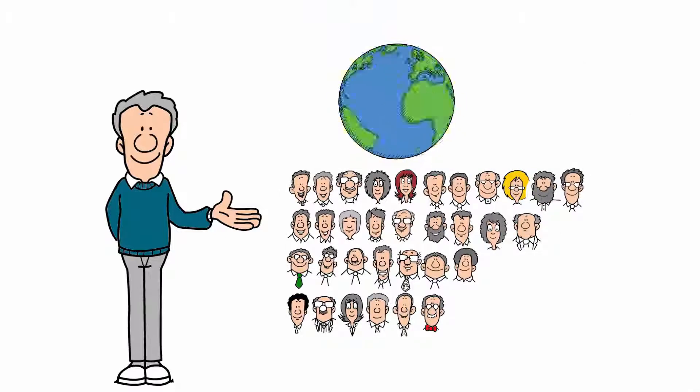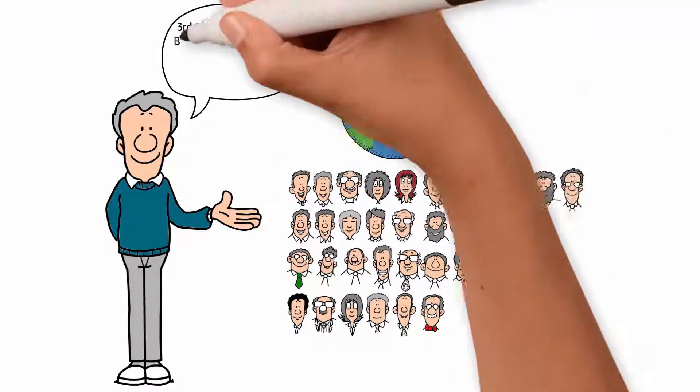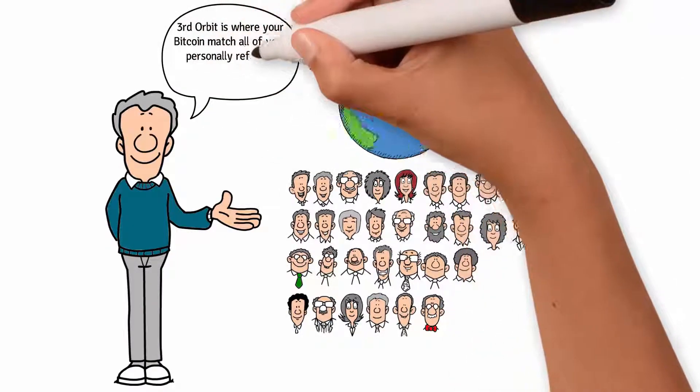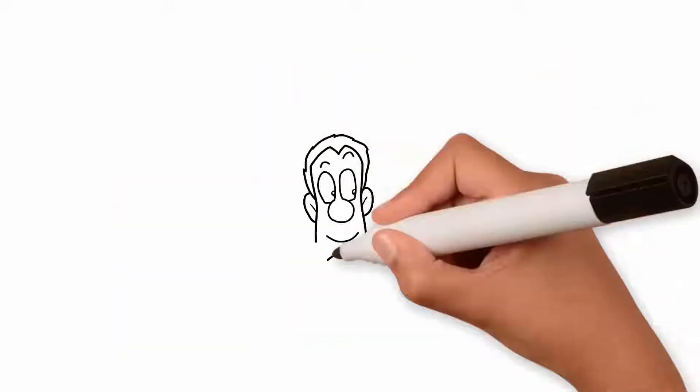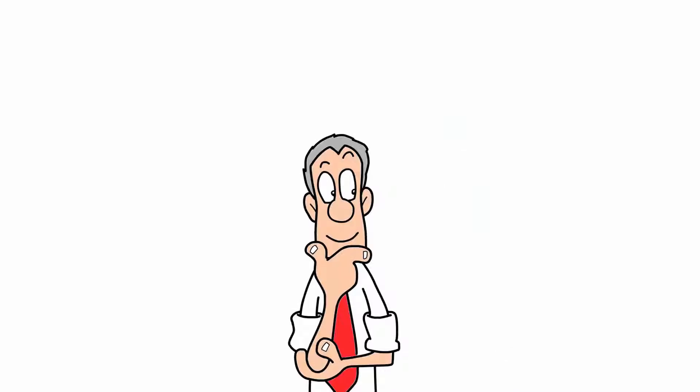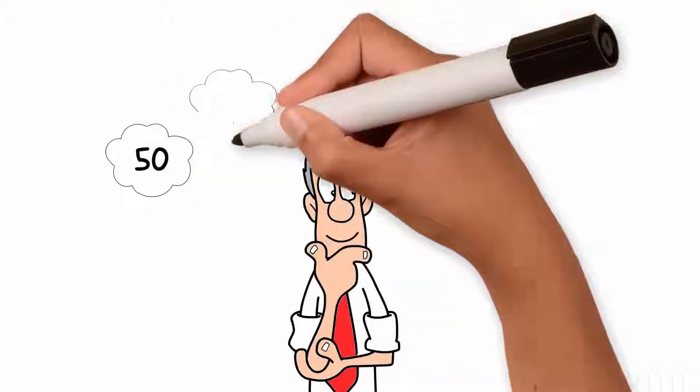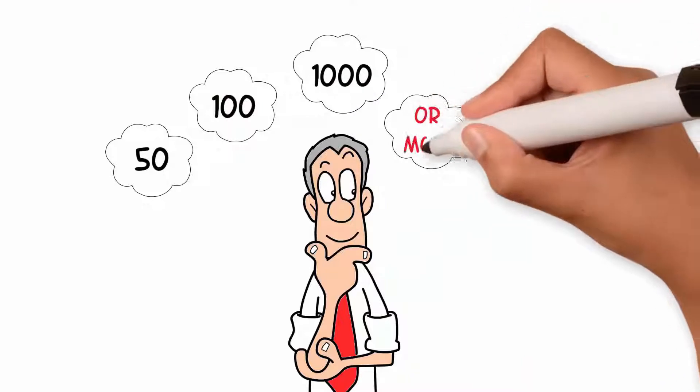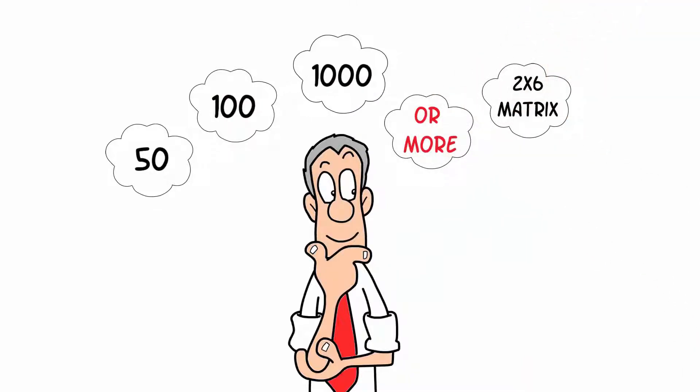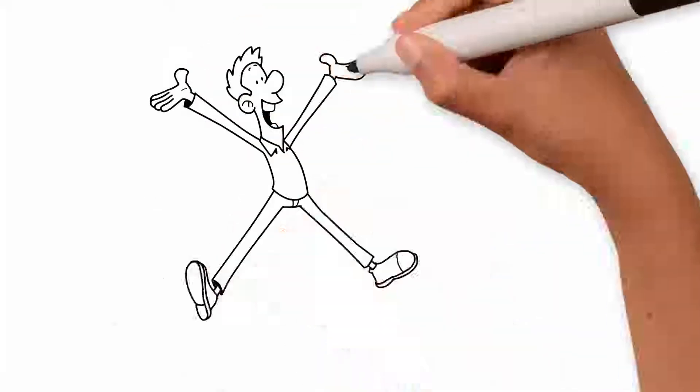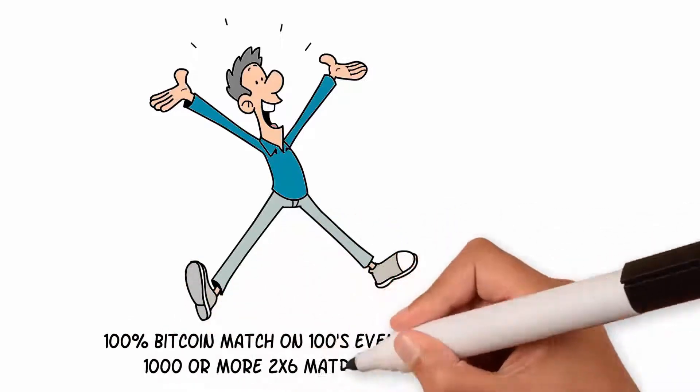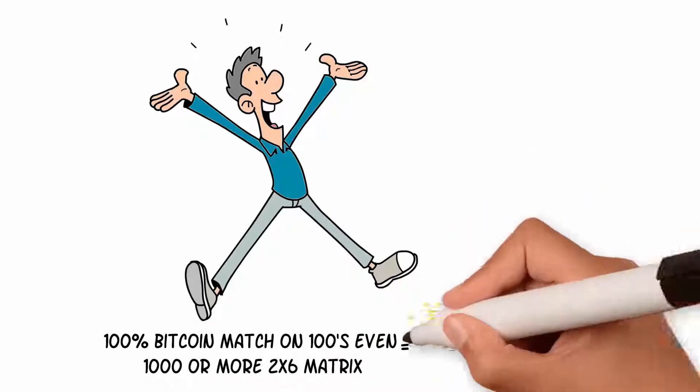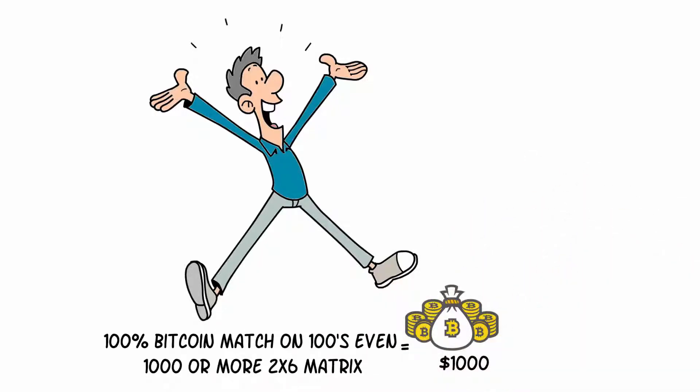The third orbit is where you bitcoin match all of your personally referred members' 2x6 bitcoin earnings up to 100%. What if between all your personally referred members, through re-entry combined, they have 50, 100, 1,000 or more 2x6 matrices in the system? You now have the potential to get a 100% bitcoin match on hundreds, even 1,000 or more 2x6 matrices that you match up to $1,000 each in bitcoin. That's simply incredible.